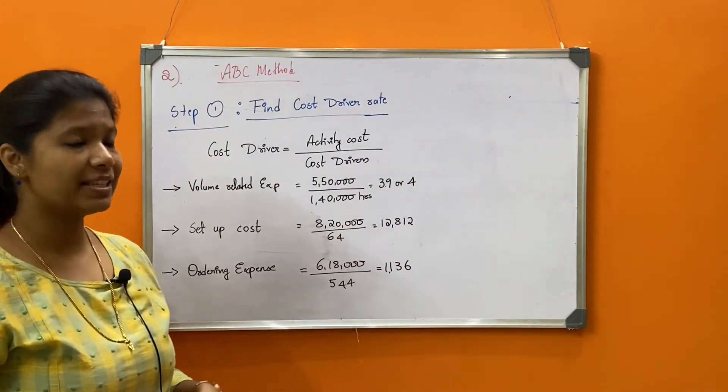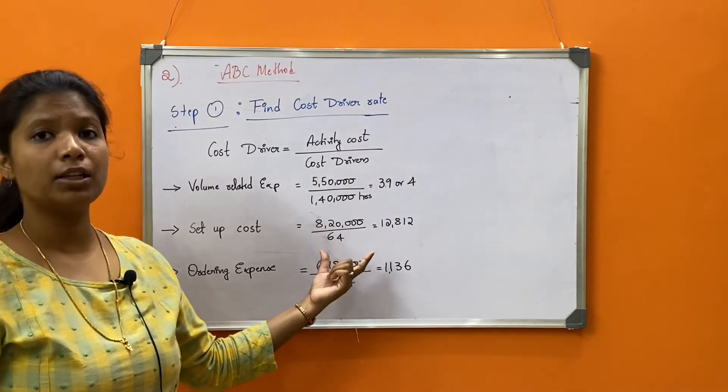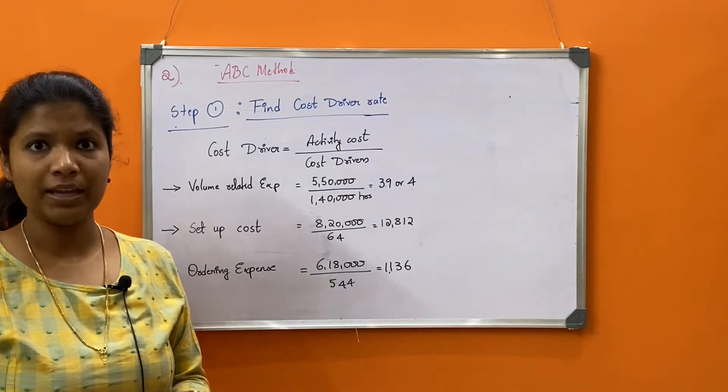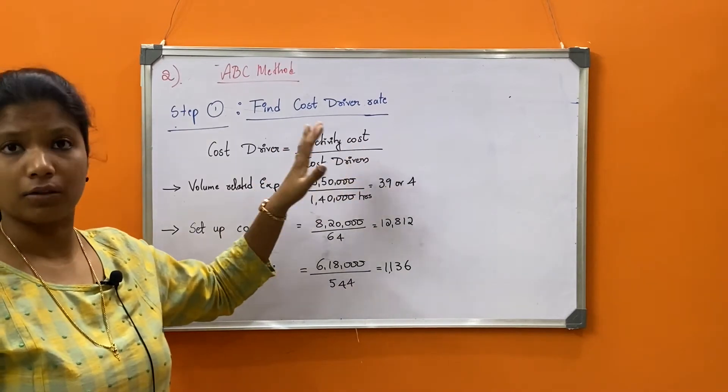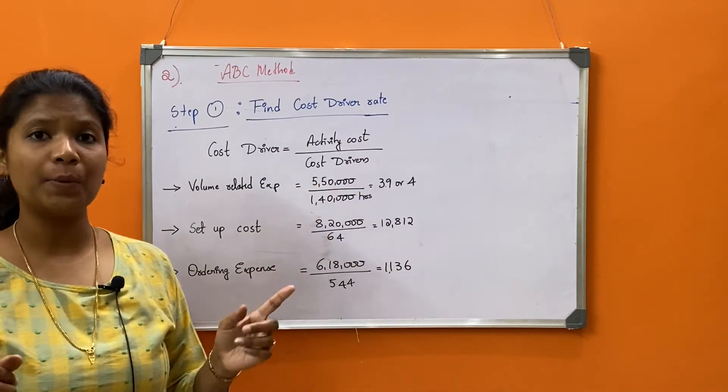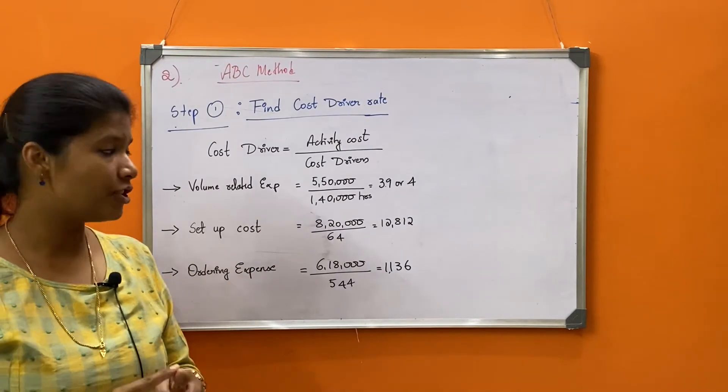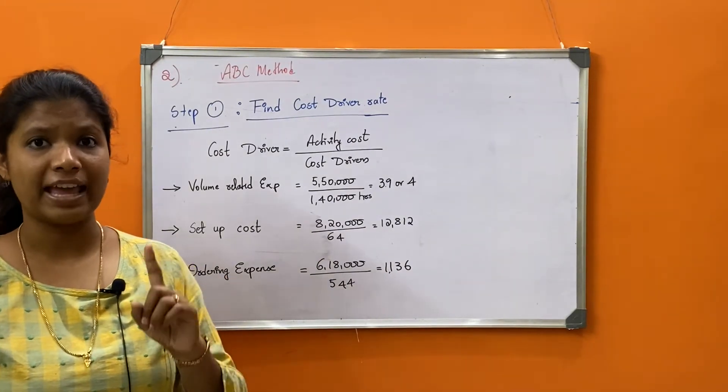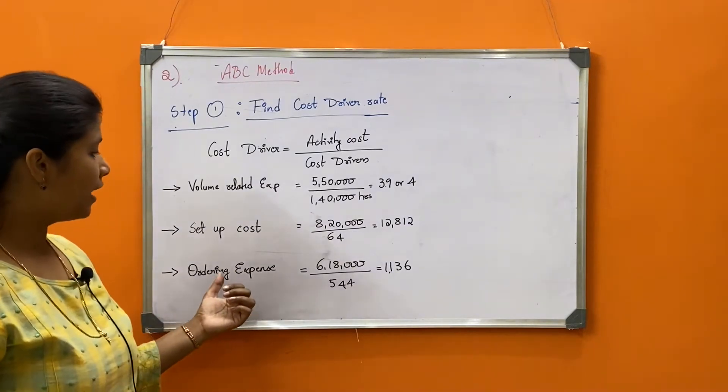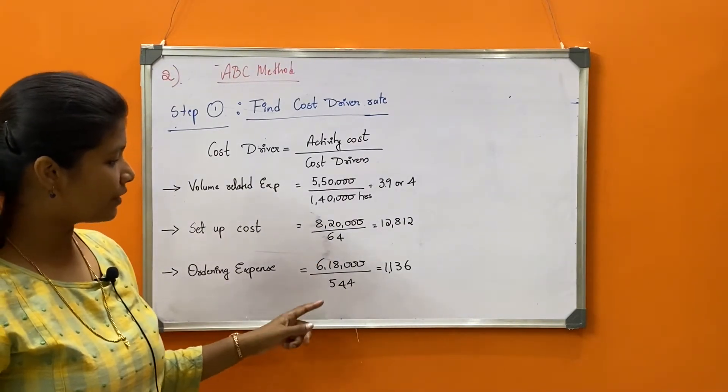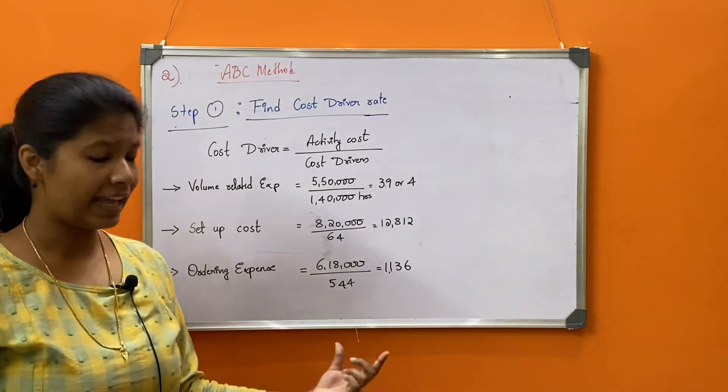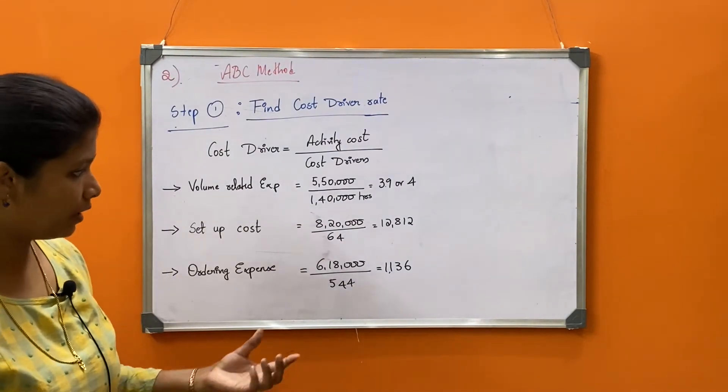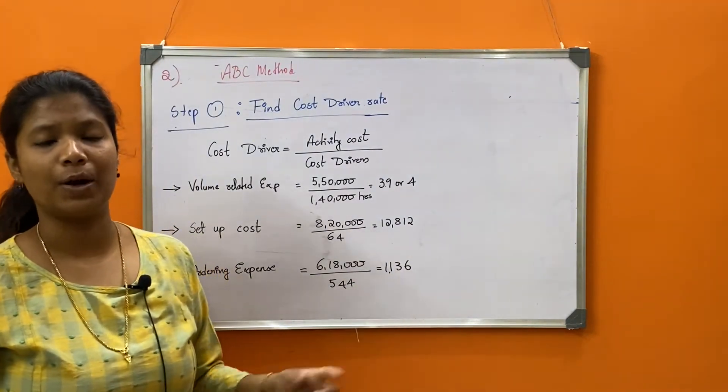Next, setup cost. The cost is 8,20,000 and 64 is the total number of setups for product A and B combined together. We need to always combine all the products' activity together when finding the cost driver. We get the value 12,812 for every setup. Next, expenses incurred in orders: 6,18,000 divided by 544. This value is the sum of product A and B, the number of orders taken. The value we get is 1136.